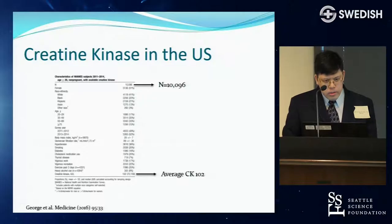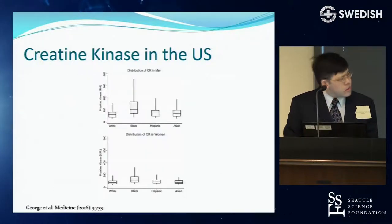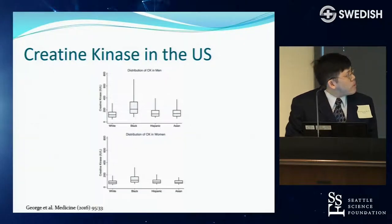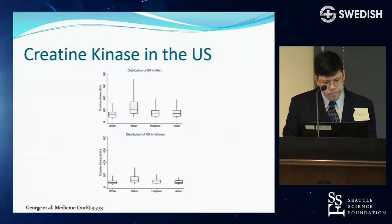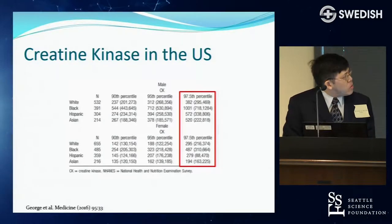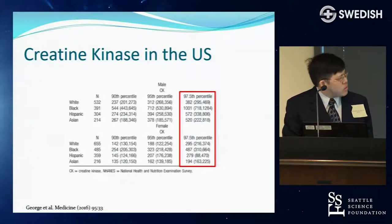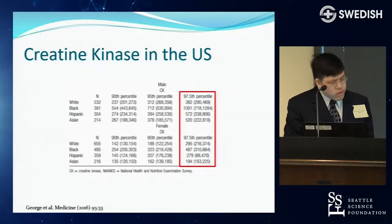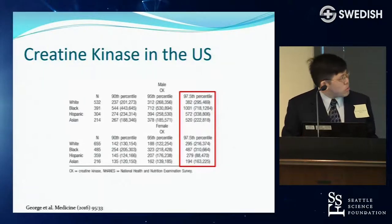A similar US study of about 10,000 people found an average CK of 102, again showing that Caucasians have lower CK than African-Americans, and that there are differences between men and women. The African-American values in the US study were a quite a bit higher percentage-wise compared to Caucasians than in the Netherlands study, suggesting some country-to-country population differences as well.